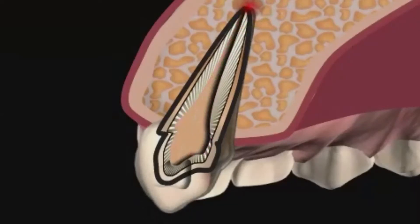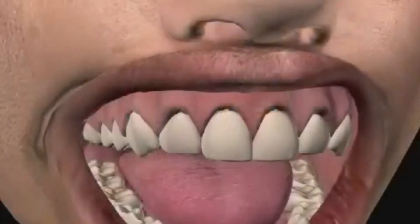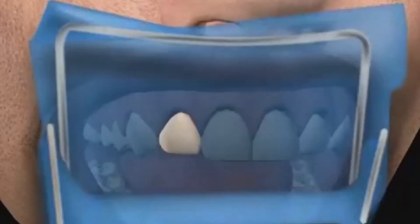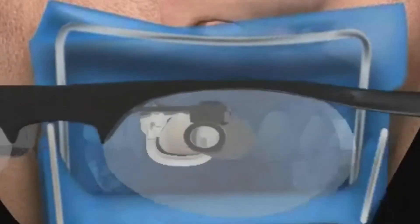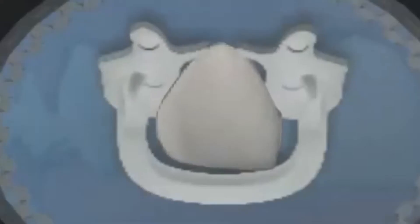However, a thorough revision is usually more complicated than a root tip resection. The work requires a rubber band, a microscope, and patience, and takes a long time. This is surely one of the reasons why a root tip resection is often chosen over a revision.